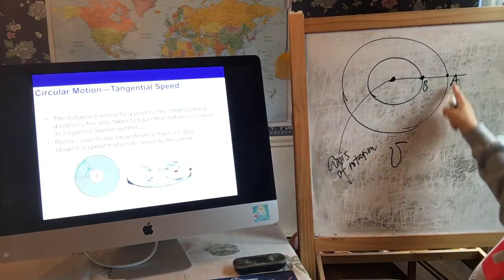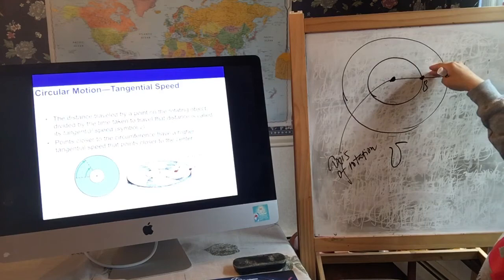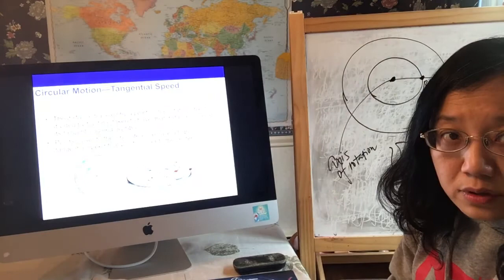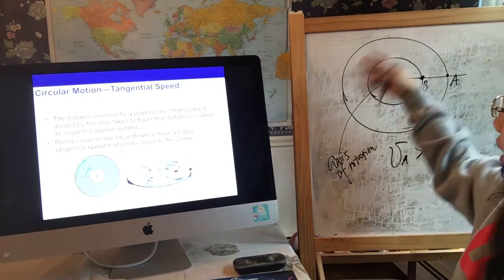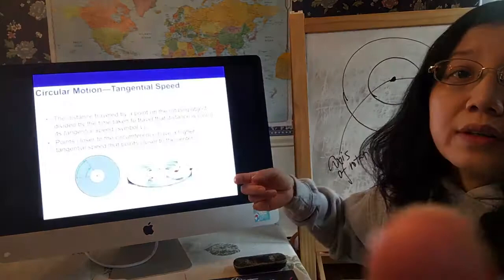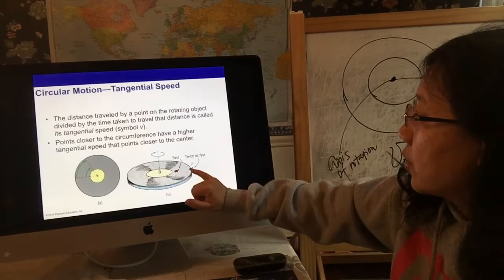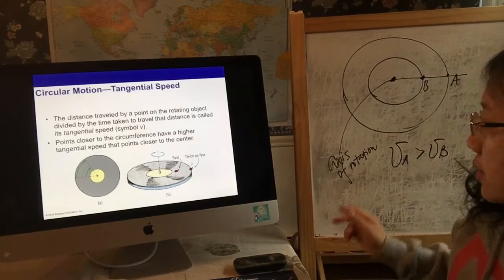These two rides go side by side and return to the same position using the same amount of time, so the time is the same. But the distance A travels is greater than the distance B travels, so the tangential speed of the two rides is very different — v_A is greater than v_B. Points closer to the circumference have a higher tangential speed than points closer to the center, so the outside ride travels faster than the inner one.